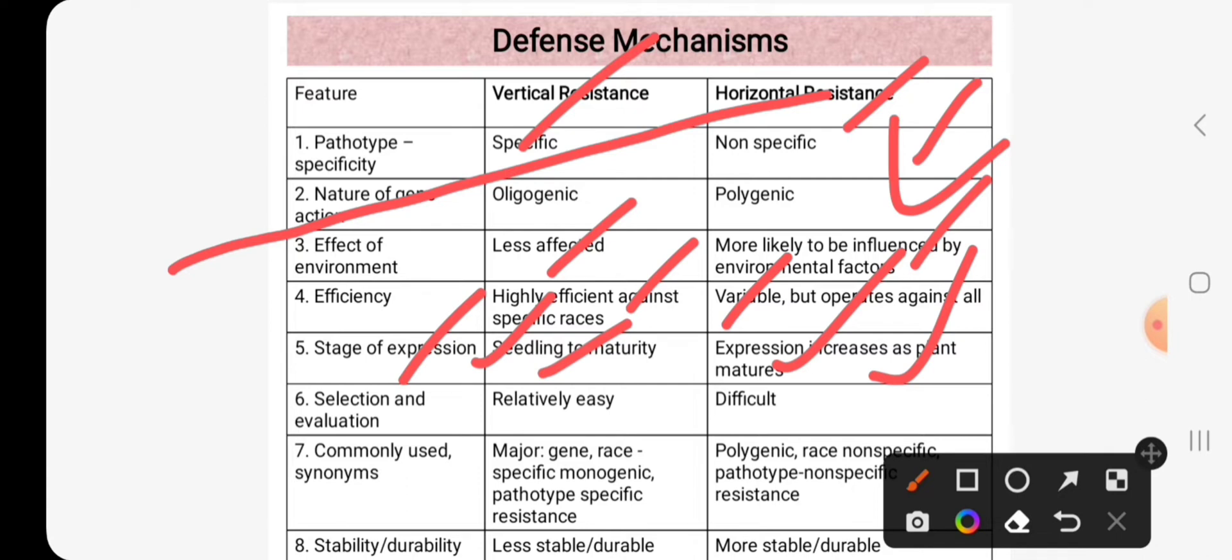Selection and evaluation is relatively easy for vertical resistance, while horizontal resistance is difficult to select and evaluate.